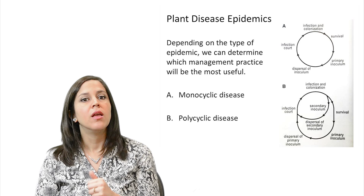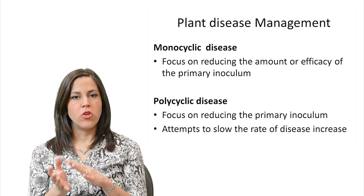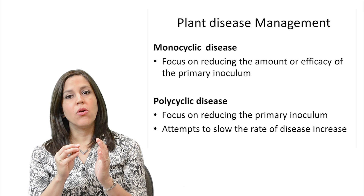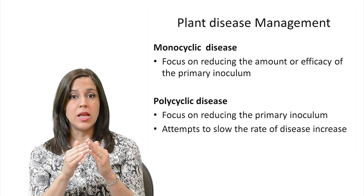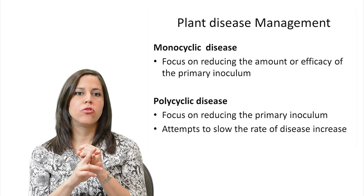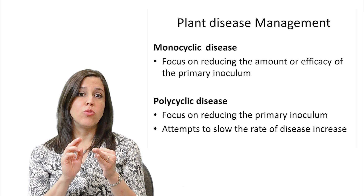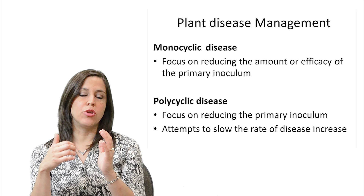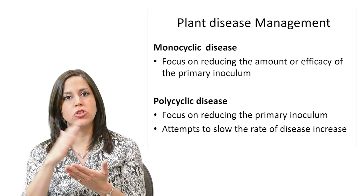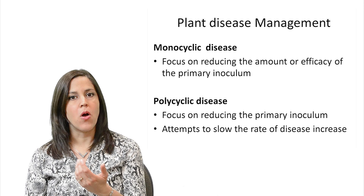For management of monocyclic diseases, we need to focus on reducing the amount or efficacy of the primary inoculum — how much inoculum is at the beginning of the season. For polycyclic diseases, we want to focus on reducing the primary inoculum but also attempt to slow the rate of disease increase. Because there are multiple rounds of infection happening, if we can slow reproduction of the pathogen, we can hopefully manage the disease better.